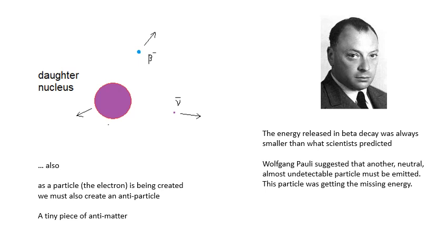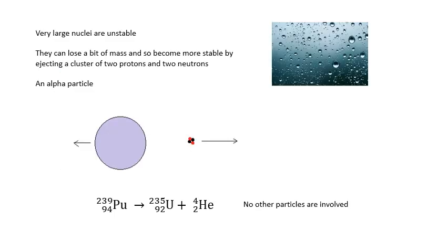As a particle, the electron is being created. We must also create an anti-particle, which is in this case, a tiny piece of anti-matter. If we created a positron, then we would create a neutrino. Yeah, so we'll talk about creation later.